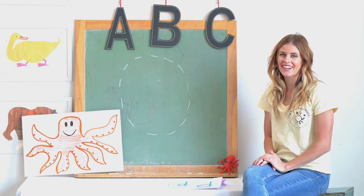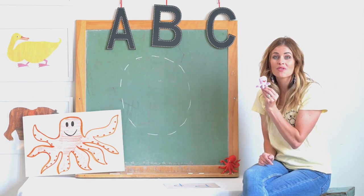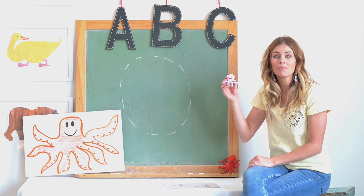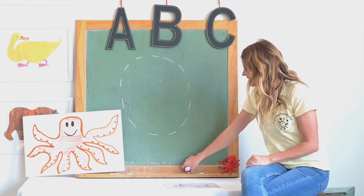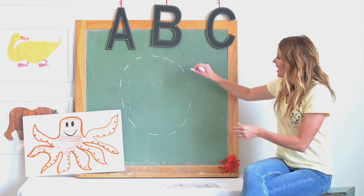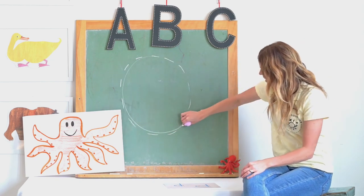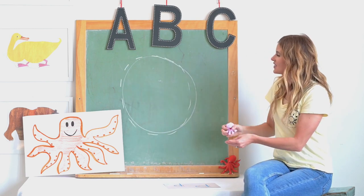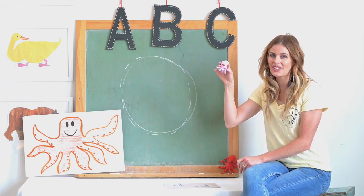Here's my octopus friend — he's going to help me write the letter O: around, close O. Great job, octopus.